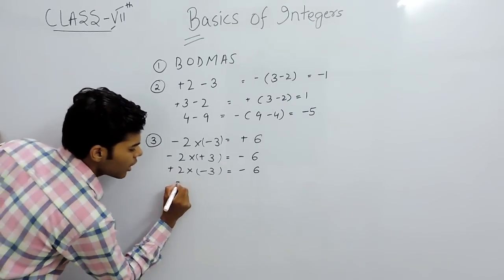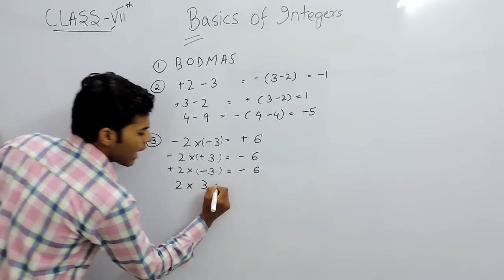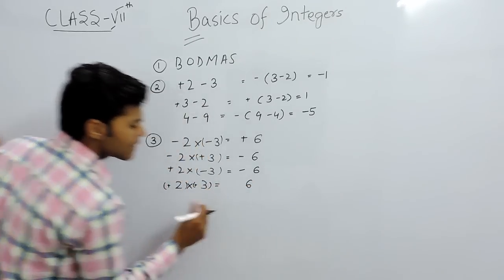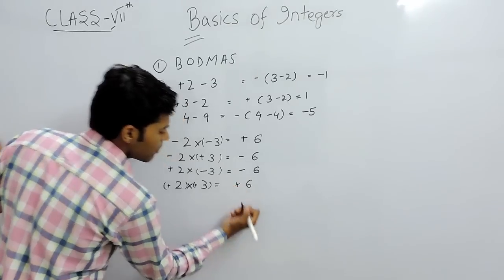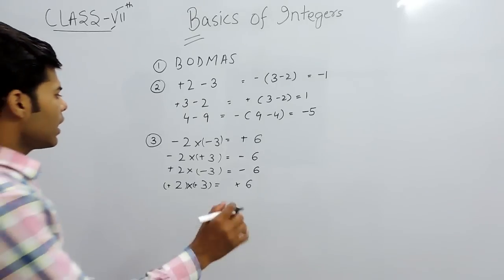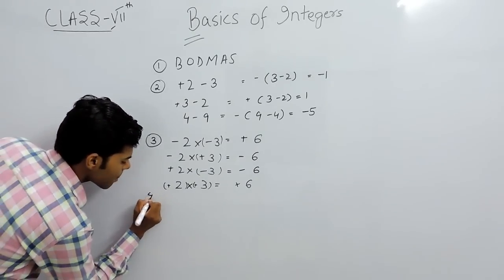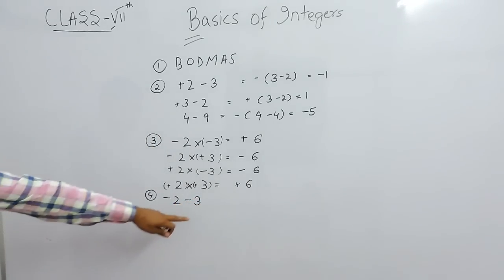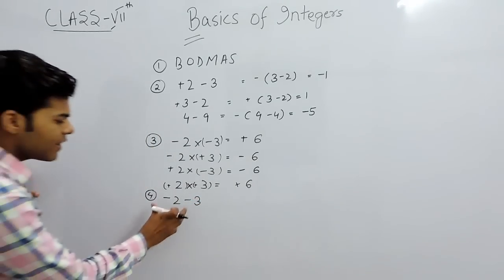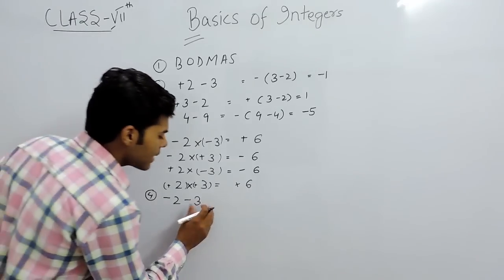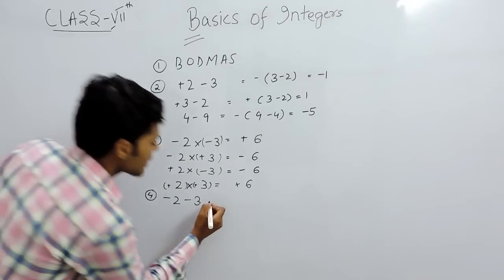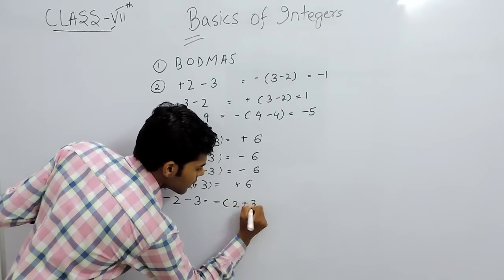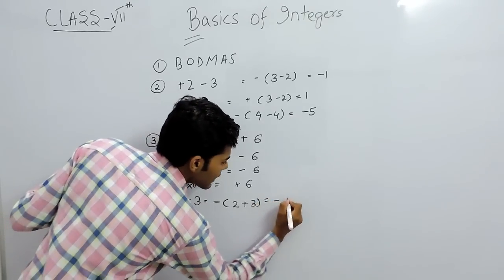Now consider minus 2 minus 3. Here, minus minus gives us plus, but the sign that comes out is minus. So minus 2 minus 3 becomes 2 plus 3, and the answer is minus 5.